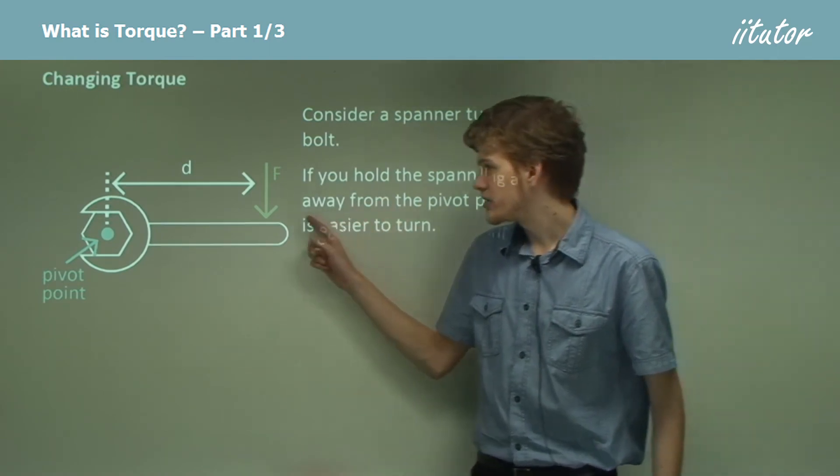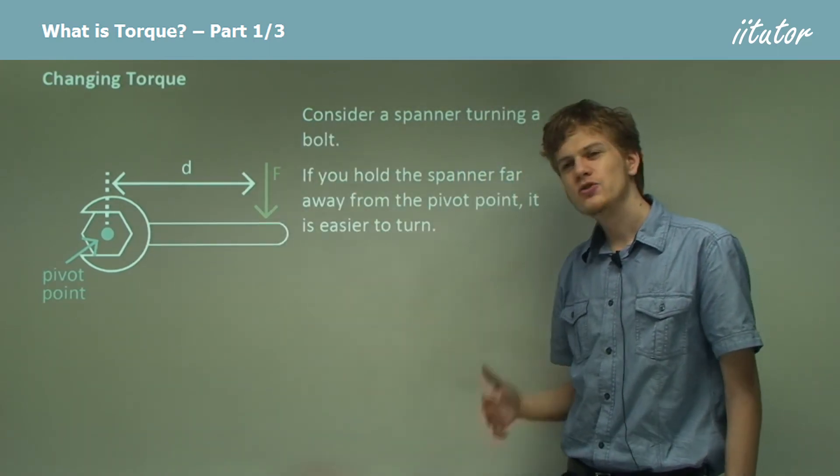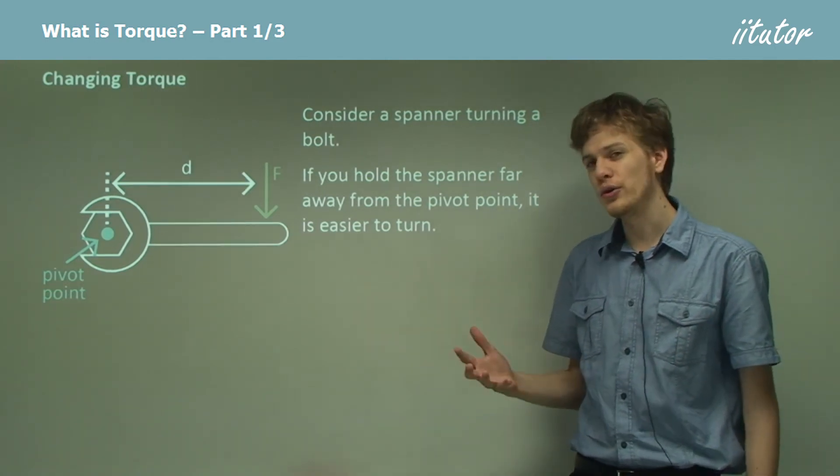So obviously the distance between the pivot point and where we push on the spanner is going to make a difference to how much turning moment or torque it can produce.